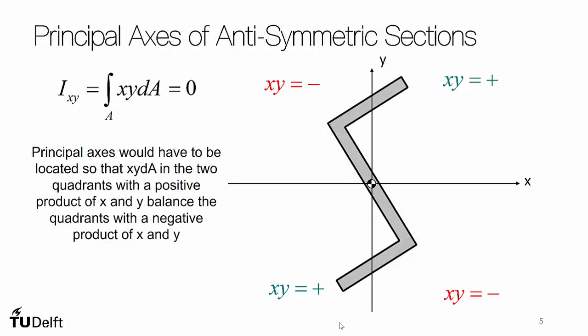In fact, the principal axes will be rotated relative to the anti-symmetry axes, and I can visually show that here, where now we have an area in the positive quadrants, and in this particular case, the y value is quite large, and that area times its x and y coordinates has to balance the areas in the negative x and y product quadrants.